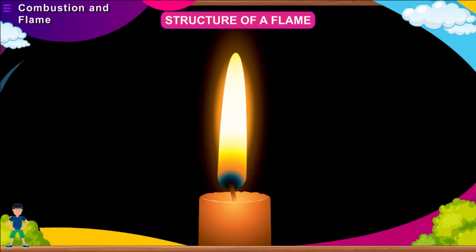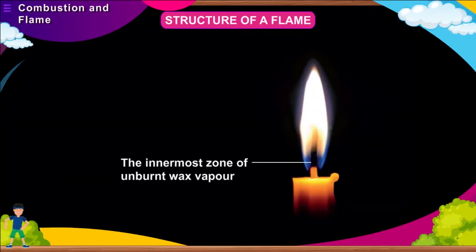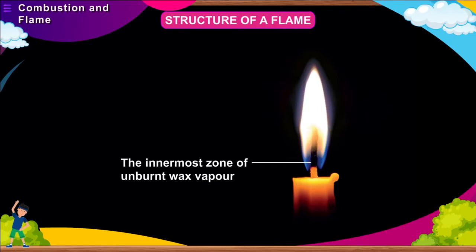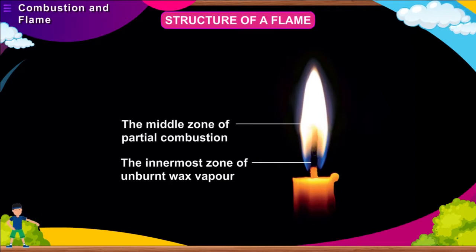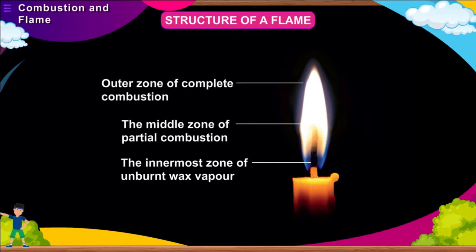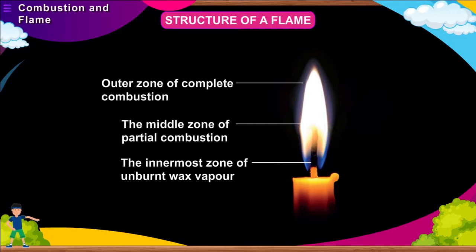A burning candle has three zones. The innermost zone of unburned wax vapor is the least hot part of the candle, appearing black due to the presence of unburned wax vapor. The middle zone of partial combustion is the major part of the flame with moderate temperature; unburned wax gives out carbon particles which burn to give yellow light, making this region yellow and luminous. The outer zone of complete combustion is where complete combustion takes place, making it the hottest zone, and its color is blue and non-luminous.